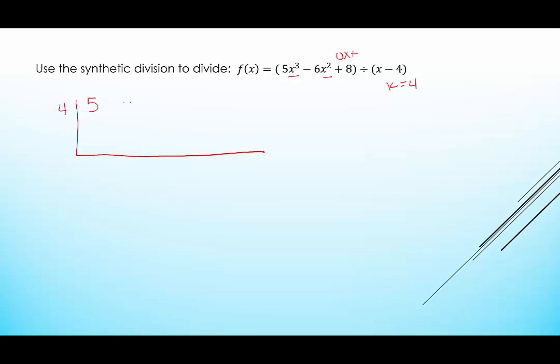We're going to write the coefficients and constant. We have 5x cubed minus 6x squared, but we're missing the x term, so we're going to have a 0x in here, and then plus 8. So when we write our coefficients we're going to say 5, negative 6, 0, 8. We bring down the first leading coefficient. Now we multiply 4 times 5 is 20. Negative 6 plus 20 is 14. 4 times 14 is 56. 0 plus 56 is 56. 4 times 56 is 224, and 8 plus 224 is 232.